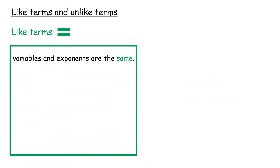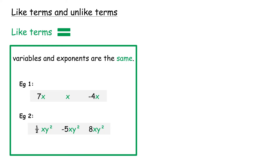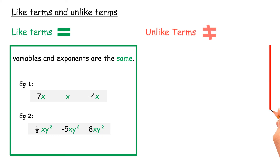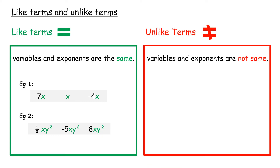Like terms are terms whose variables and their exponents are the same. For example, 7X, X, and negative 4X are all like terms because the variables are all X. Half XY squared, negative 5XY squared, and 8XY squared are all like terms because the variables are all XY squared. Unlike terms are terms whose variables and/or exponents are not the same. For example, 2X, 2X squared, 2Y, and 2XY are all unlike terms because the variables and/or exponents are different.